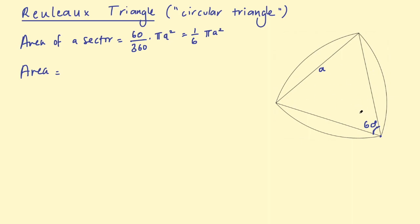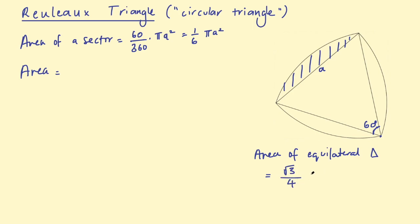That's the area of the total sector. To find the area of this segment — the shaded region — I take the area of the sector minus the area of the equilateral triangle. Here's a shortcut for the area of an equilateral triangle: if you're given the side length, it is (√3/4) times the side length squared. So we have (√3/4)A² for the triangle area. The area of the segment is therefore (1/6)πA² minus (√3/4)A².